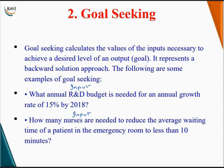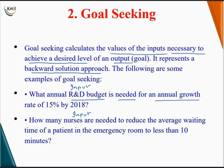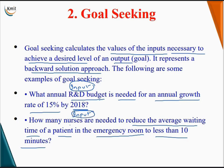The next topic is goal seeking. Goal seeking calculates the values of the inputs necessary to achieve a desired level of an output. It represents a backward solution approach. Examples include: what annual R&D budget is needed for an annual growth rate of 50% by 2018? And how many nurses are needed to reduce the average waiting time of a patient in the emergency room to less than 10 minutes? Here the input is the number of nurses.